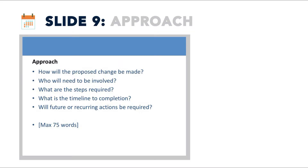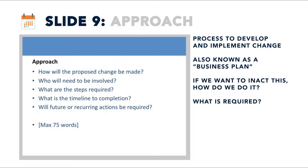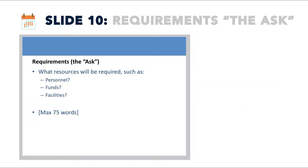Next is the approach — the process which is going to be used to develop and implement the proposed change. If this were a commercial presentation, this would be the business plan. Describe how the proposed changes will be made, who needs to be involved, what are the steps required, and what is the timeline to completion. Will future recurring actions be required? Outline the requirements or the ask — describe which resources will be required, including personnel, funds, or facilities. Sometimes policies have to be changed as well. Remember, the shorter the better.